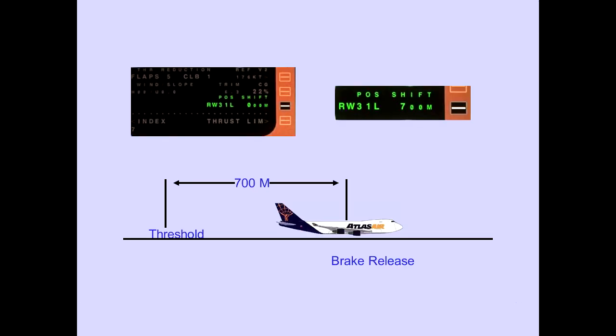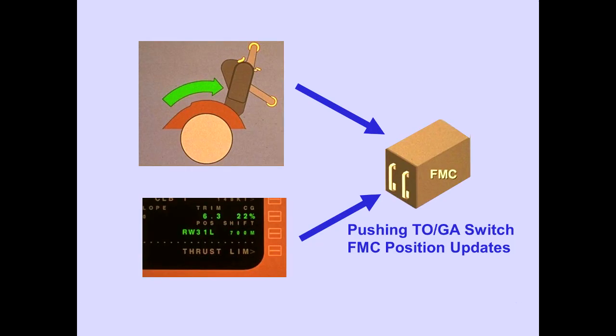The position shift line displays the runway identifier on the left and the distance of the takeoff brake release point from the runway threshold in meters. In this example, position shift is 700 meters. Pushing the throttle TOGA switch updates the FMC position using the position shift value from the takeoff reference page. Using the TOGA switch is covered in the auto-throttle module.